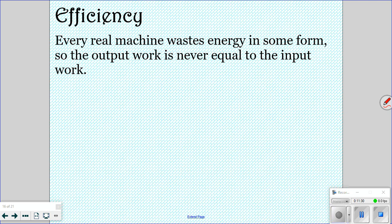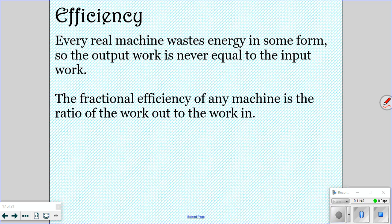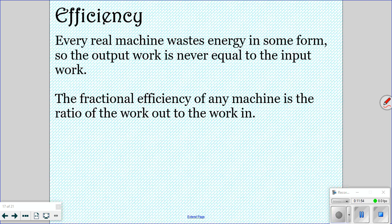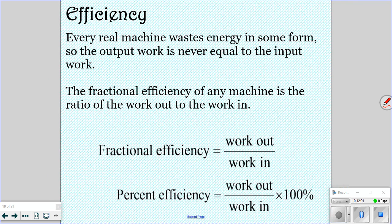Now we're going to look at efficiency. Every real machine wastes energy in some form. So the output work is never equal to the input work. It may be in the form of steam or it may be in the form of heat or friction, but somehow your machine is going to waste energy. It's not going to be 100% efficient. The fractional efficiency of any machine is just the ratio of the work out to the work in. So that gives you this formula: work out over work in. So if you multiply it by 100% that gives you your percent efficiency.